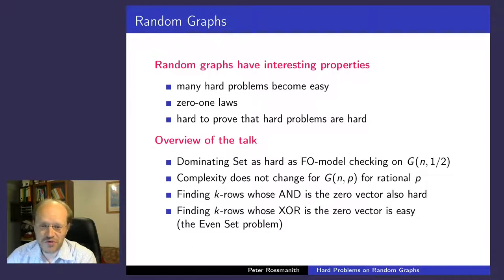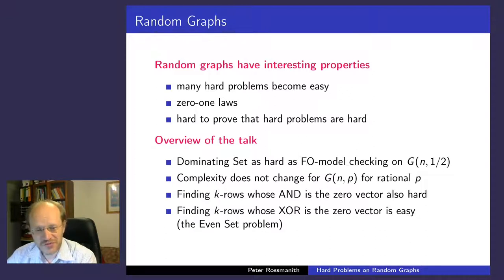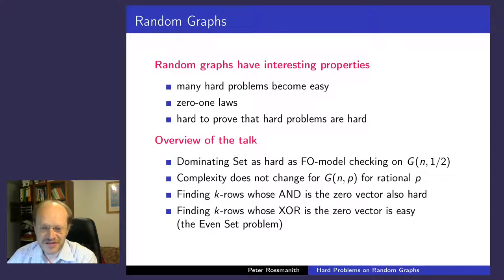I will use a related problem in the proof that is interesting in itself. You have a random matrix of zeros and ones, quadratic, and the question is: can I find k rows such that the pointwise AND of those rows gives the zero vector? It turns out this problem is just as hard as the FO model checking problem. On the other hand, if you take the exclusive OR of the rows, the problem becomes easy — which is interesting because that is one version of the even set problem, which is hard in the worst case.